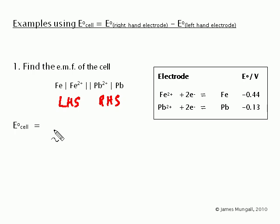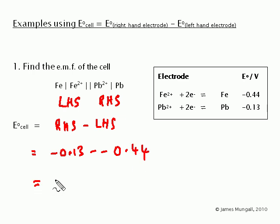Writing out the formula, E cell is the right hand electrode subtract the left hand electrode. We can just put in the numbers, so the right hand side is the lead there which is minus 0.13, then we subtract the left hand side which is minus 0.44. That's a double minus, so minus minus 0.44, which comes out as plus 0.31 volts.